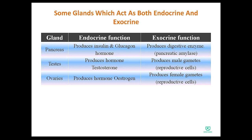The third gland with both functions is the ovaries. The ovaries are the female reproductive glands. Their endocrine function is that they produce the hormone estrogen. Their exocrine function is that they produce female gametes, which are called reproductive cells.